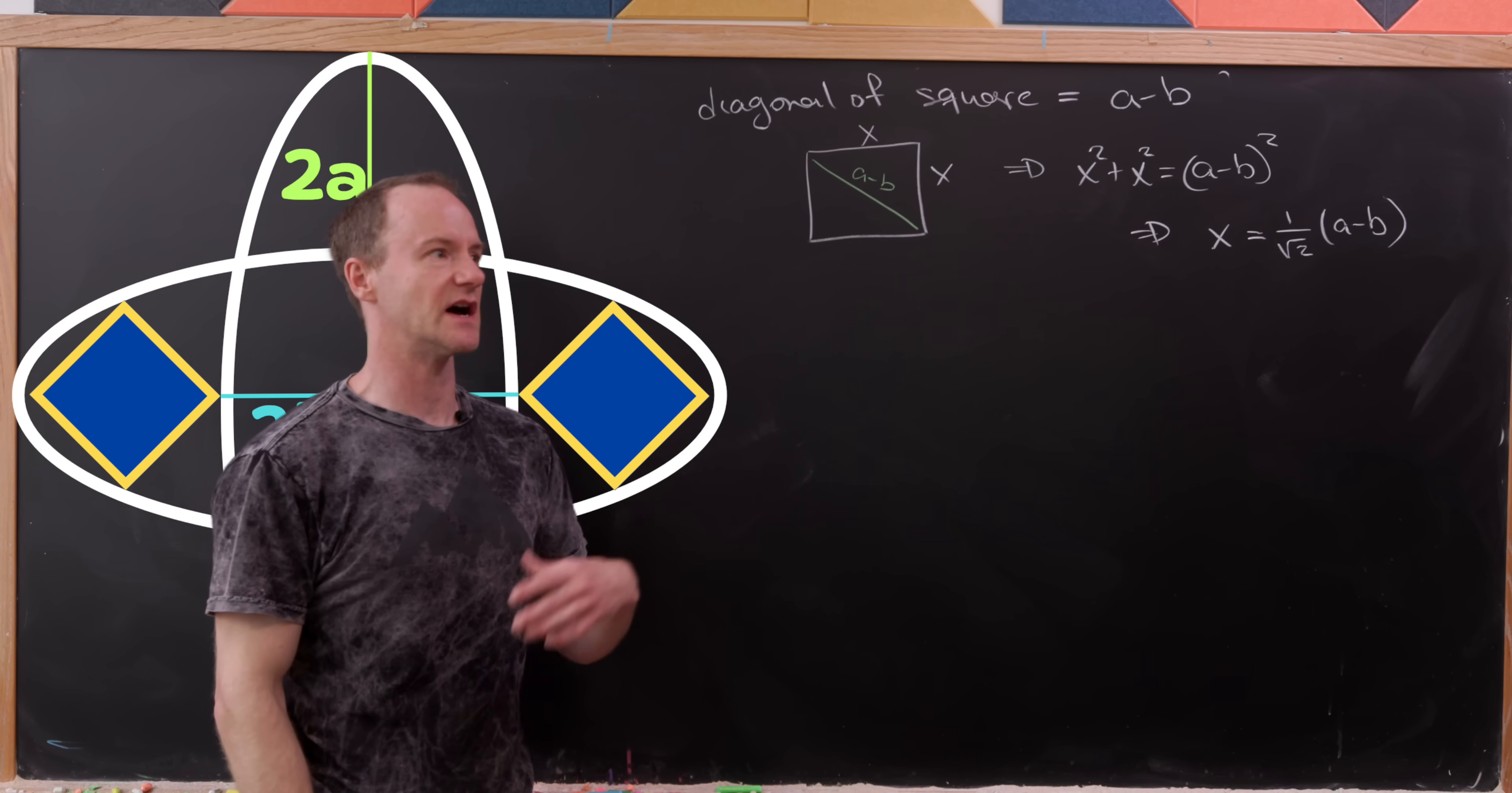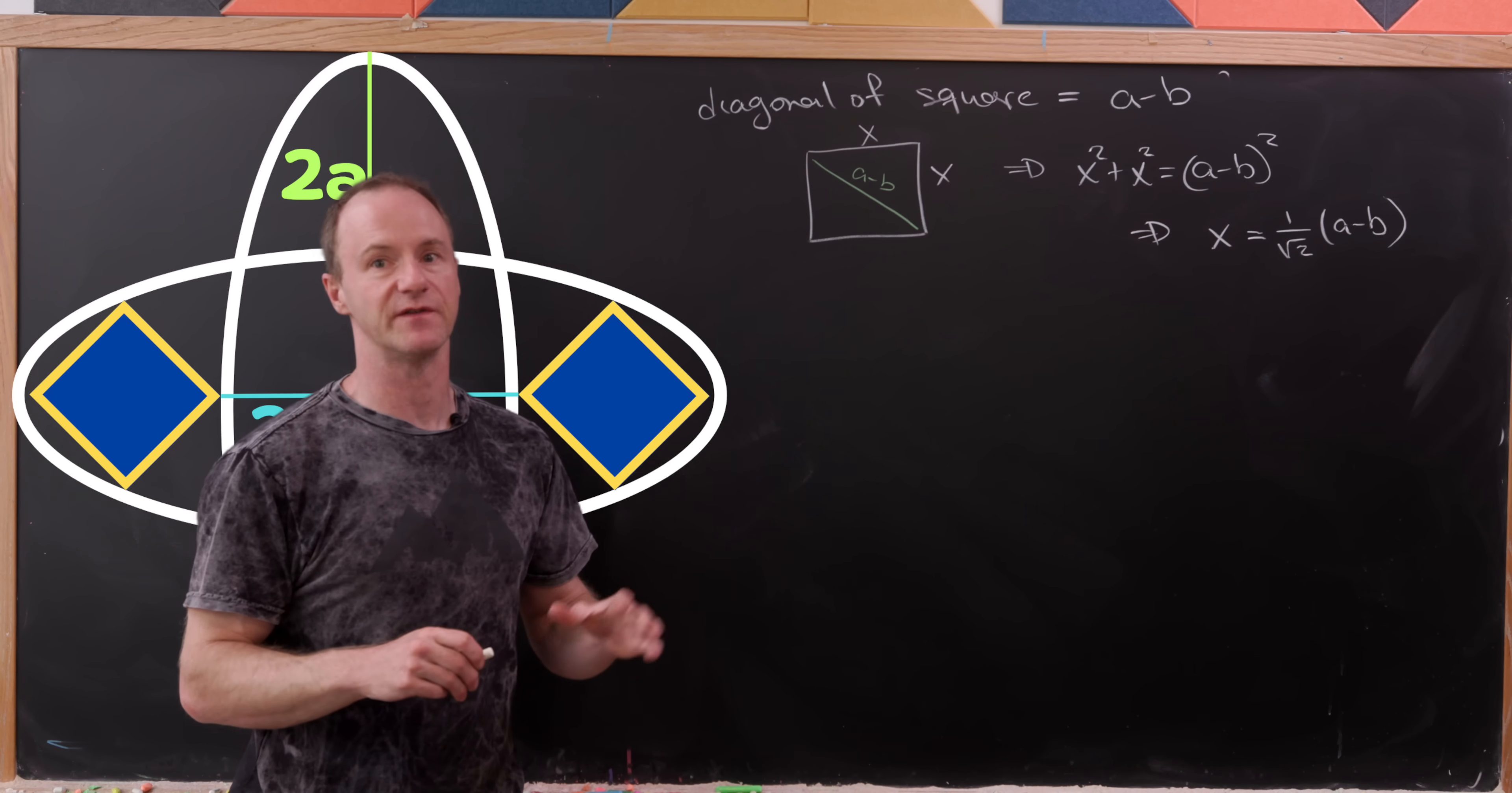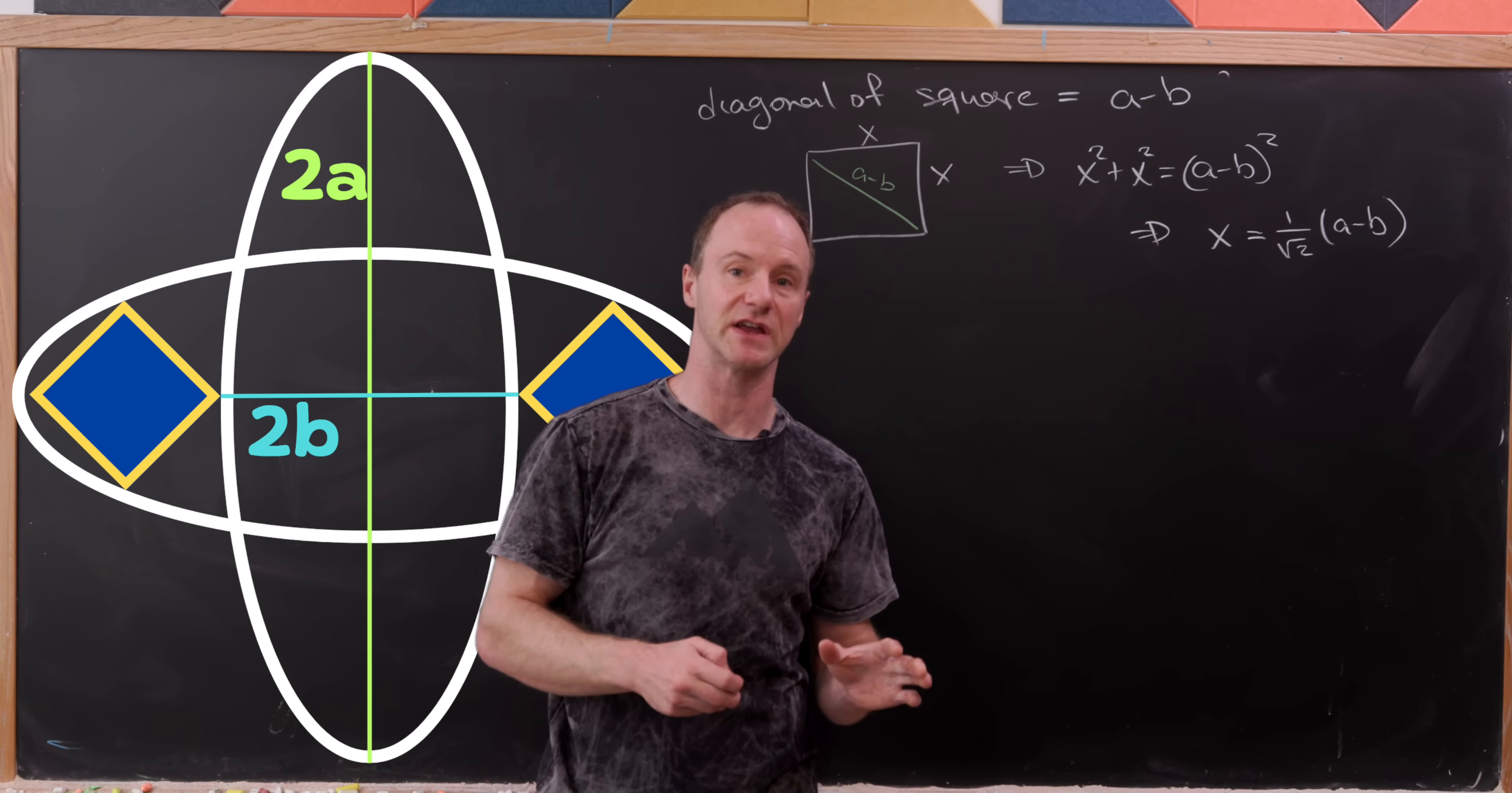And so it seems like we're done, but in fact we're not done, because as you might imagine, not all possible values of A and B will permit a square to be inscribed the way that we've been having it inscribed.